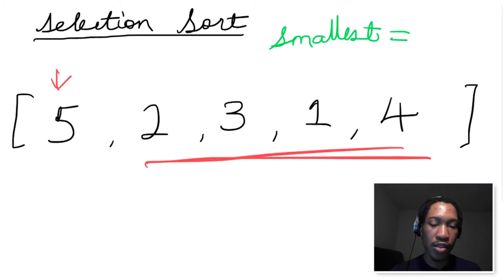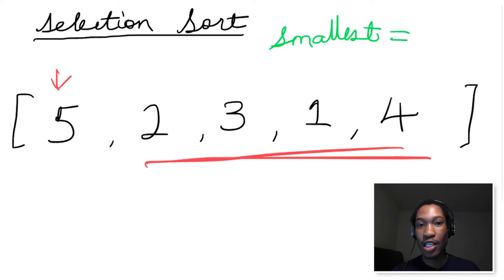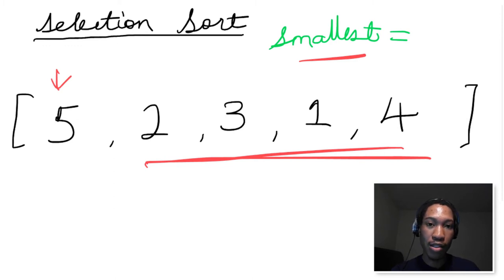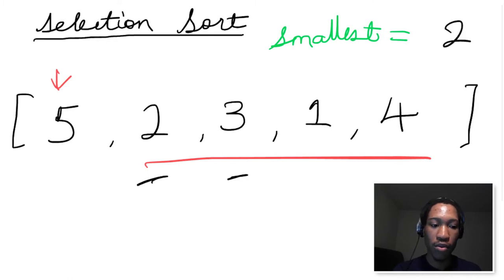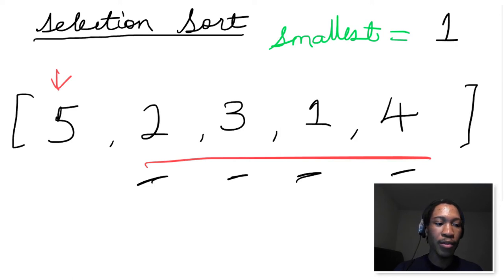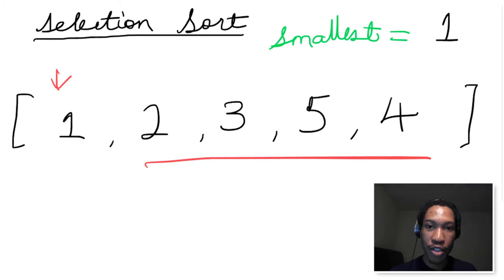While we're searching for the smallest element in this subarray, we're going to have a variable that keeps track of our current smallest element. Whenever we encounter a number smaller than our current smallest, we update it. So we start with smallest element as 5. We get to 2 — is 2 smaller than 5? Yes, so we update to 2. We get to 3 — is 3 smaller than 2? No. We get to 1 — is 1 smaller than 2? Yes, so we update to 1. We get to 4 — is 4 smaller than 1? No. Now we're at the end of the array, so we know the smallest element is 1. We swap 1 with 5, and we're done with that.